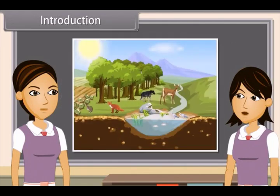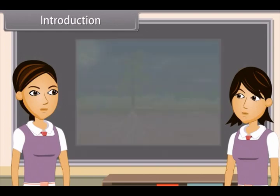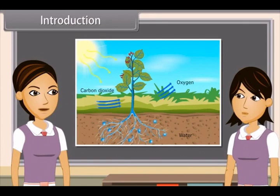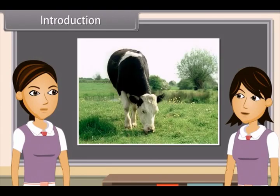When we observe it closely, we find that all the living things on earth actually depend on the sun for their food, directly or indirectly. Plants use the energy of the sun and prepare food by photosynthesis, which is utilized by them to maintain their life. In turn, these plants are eaten by herbivores and omnivores, and carnivores eat herbivores as their food. So it is energy from the sun which provides food for plants and animals.